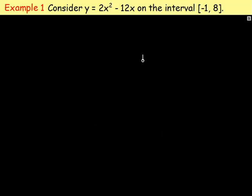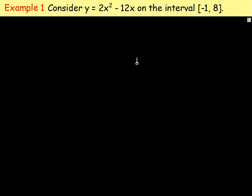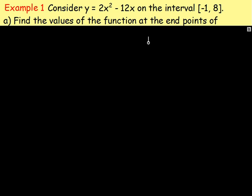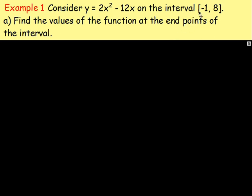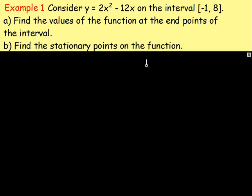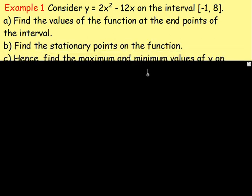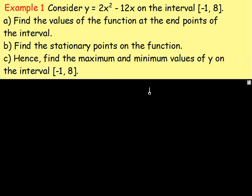Example number one. Consider y equals 2x squared minus 12x on the interval negative 1 to 8, meaning x is going between negative 1 and 8. First, find the values of the function at the end points — what is y when x is negative 1, and what is y when x is 8? Part b: find the stationary points of the function.